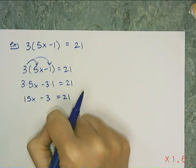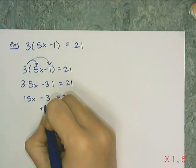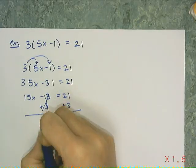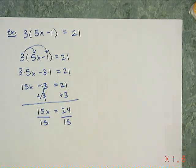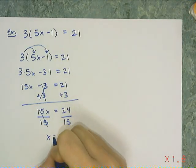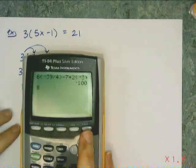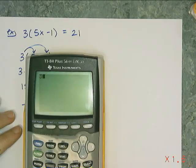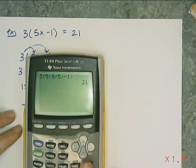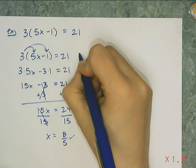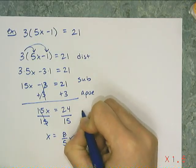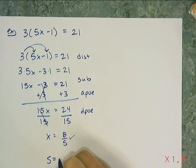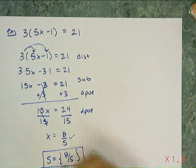I've turned it into a two-step equation. I add 3 to both sides — those 3s cancel — and get 15x equals 24. Then I divide both sides by 15 and get x equals 8 fifths. I verify: 3 times (5 times 8/5 minus 1) equals 21, and it does. So I distributed, used substitution, then the addition property, then the division property. The solution set is {8/5}.